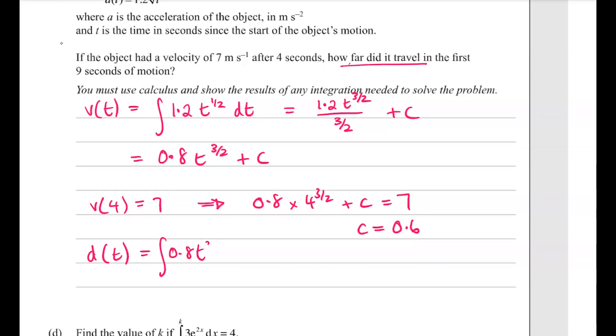Now it will have traveled 0 distance at t equals 0, after no seconds it would have traveled 0 distance, so actually c would be equal to 0 if we substituted that in. So now we can work out the distance it's traveled after 9 seconds by putting 9 into this with c equal to 0.